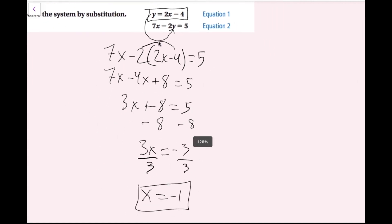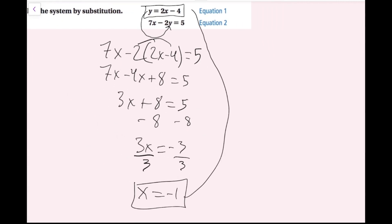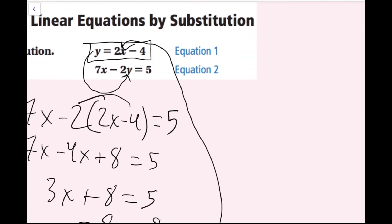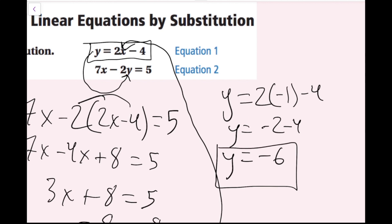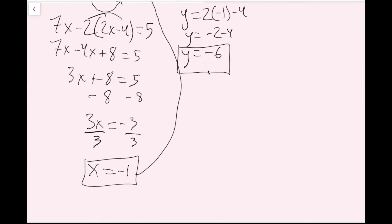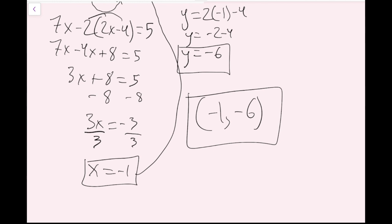So I'm going to use the top equation and plug x in there. That's going to be y equals 2 times negative 1 minus 4. Well, 2 times negative 1 is negative 2, and negative 2 minus 4 is equal to negative 6. So I have my y value, and I have my x value. I need to write my answer as an ordered pair, so it's going to be negative 1 comma negative 6. I have successfully solved this system of equations.